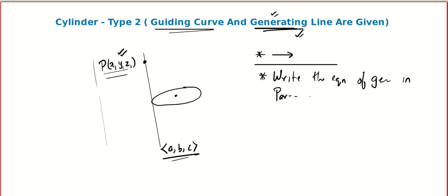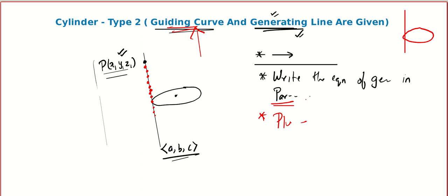Parametric form gives us access to every point in a line. Now, looking at the picture, you can understand that the generating line will touch our guiding curve. So what we do next is we plug in this parametric form into the guiding curve. We made a line and we are making sure that that line will touch the guiding curve. Then write the equation of the generating line in parametric form, and plug that parametric form into the guiding curve.